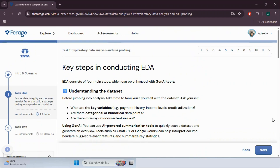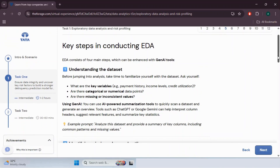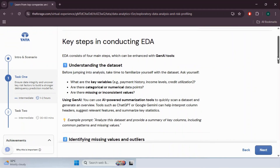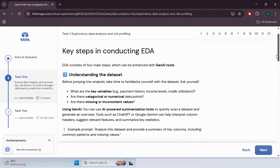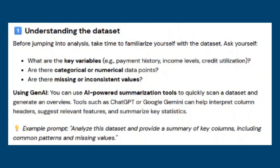There are four steps in conducting EDA which can be enhanced with GenAI tools. Step one is understanding the dataset. Before jumping into analysis, familiarize yourself with the dataset — ask what the key variables are, whether there are categorical or numerical data points, and whether there are missing or inconsistent values. Using GenAI, you can use AI-powered summarization tools to quickly scan a dataset and generate an overview. For example, ask: 'Analyze this dataset and provide a summary of key columns, including common patterns and missing values.'